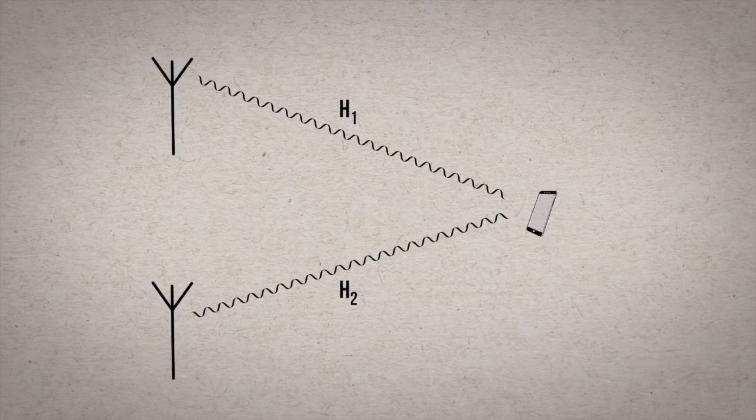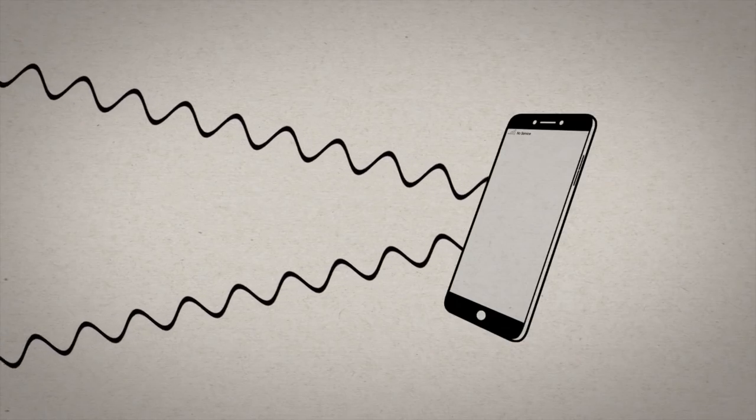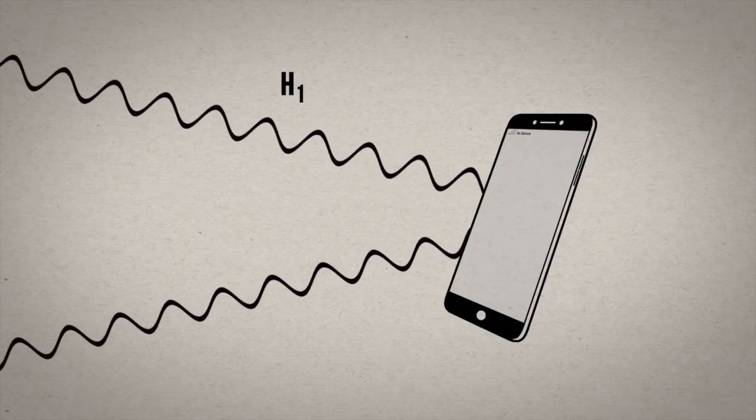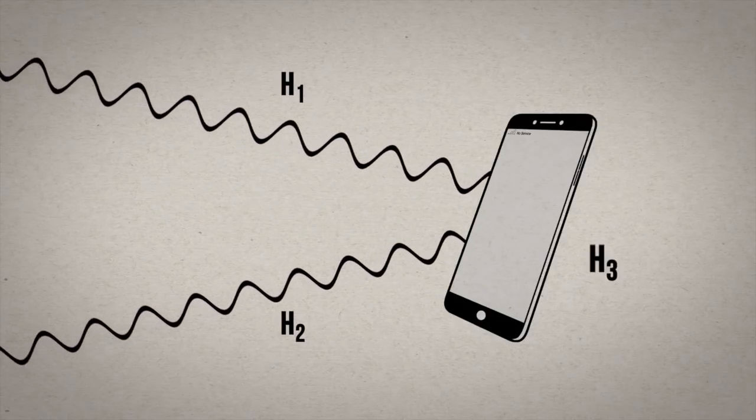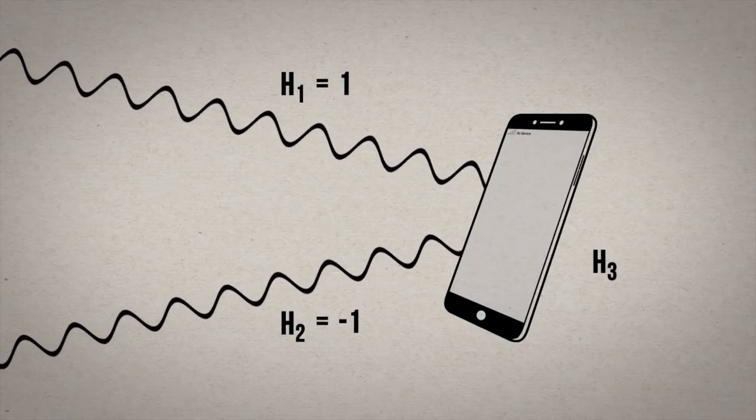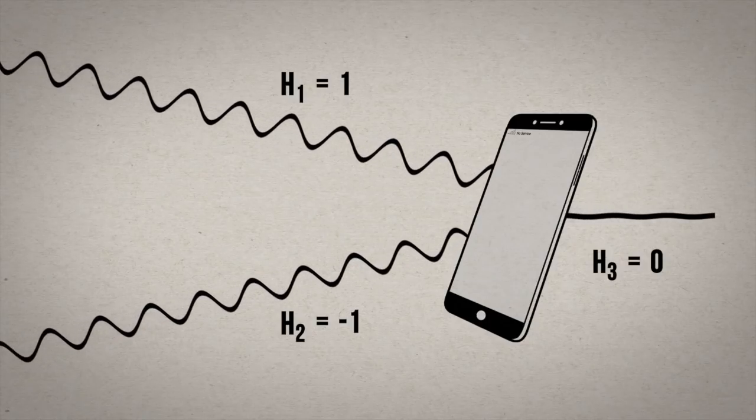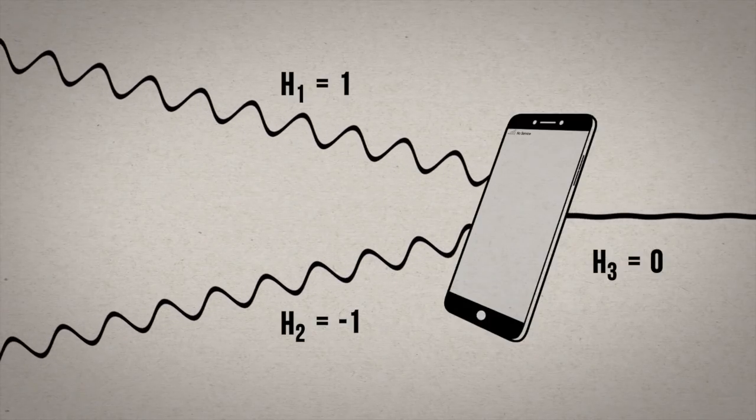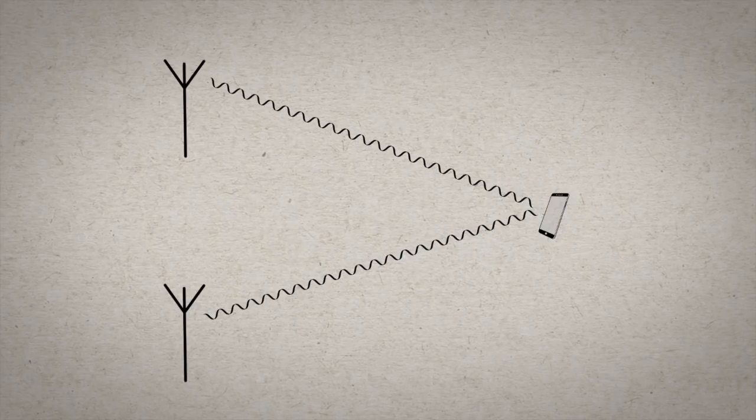However, there is one subtle problem to address to make this system work. It's due to the fact that the transmitted signals will combine at the receiver antenna. So from the receiver's perspective, it looks like a single signal was received with a new fading characteristic, let's call it H3, which is the addition of H1 and H2. And so if H1 and H2 happen to be perfectly out of phase, they will combine to form H3 equals 0, erasing the signal, even though both of the channels were good on their own.